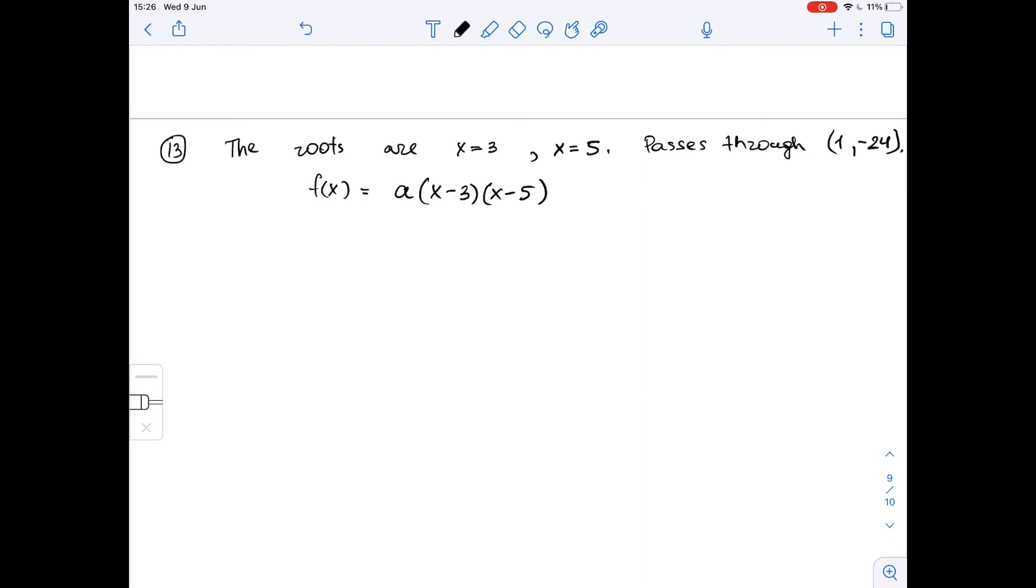But we know that it passes through the point (1, negative 24), so we can substitute those values. We substitute negative 24 instead of y, and we substitute x with 1. So this will be (1 minus 3) times (1 minus 5). Let's simplify it. We get that negative 24 is equal to a times negative 2 times negative 4.